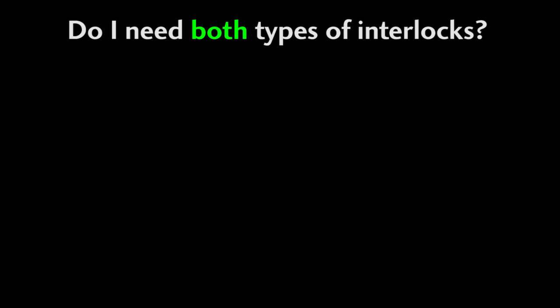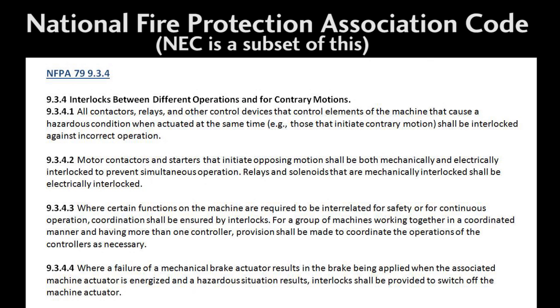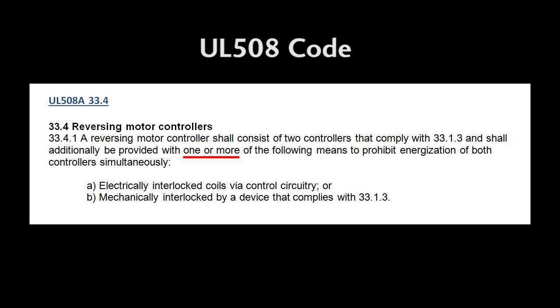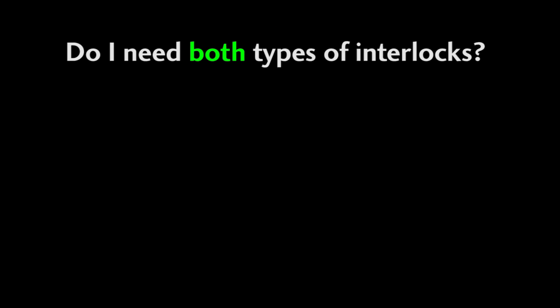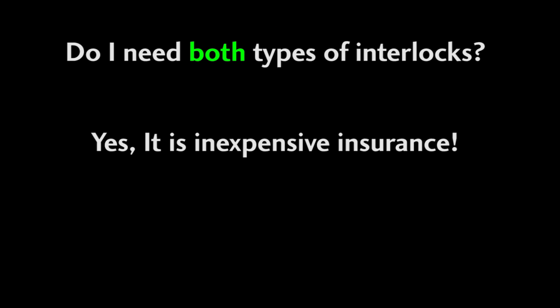Do you need both types of interlocks? Well, that depends on your application. For example, the National Fire Protection Association Code, which the National Electrical Code is a subset of, does require both kinds of interlocks when contactors are used for opposing motion. UL508, on the other hand, requires one or more interlocks. And since they are so cheap and easy to do, why wouldn't you do both? It's an inexpensive way to protect your valuable equipment.